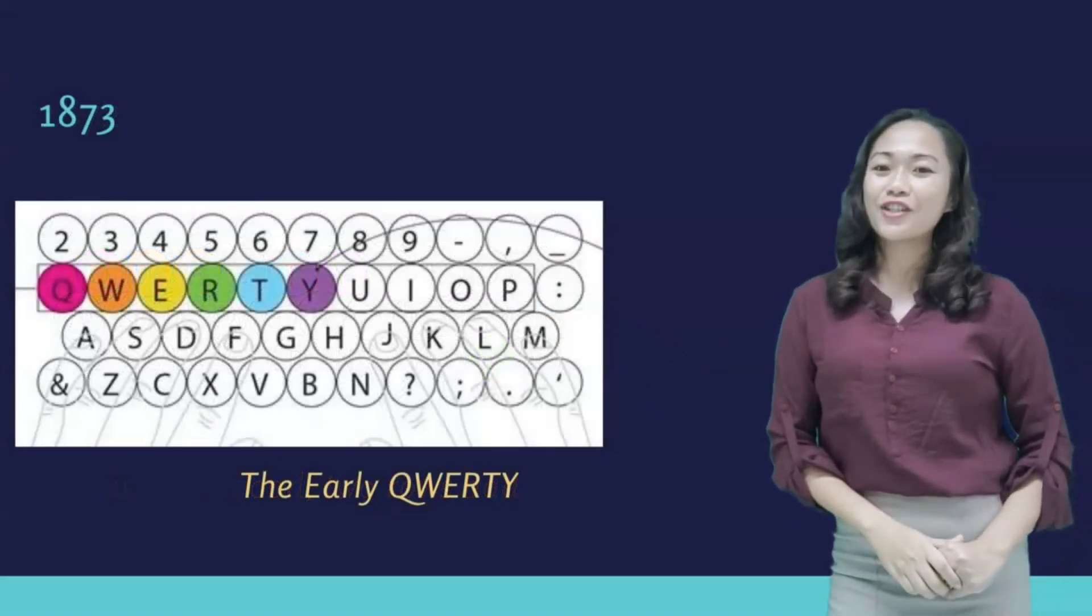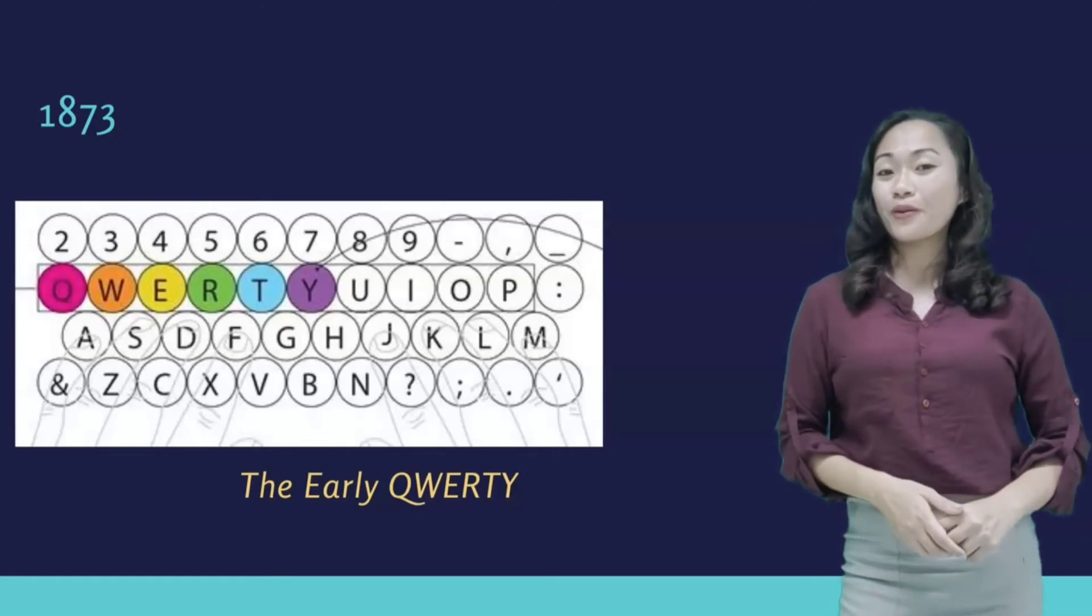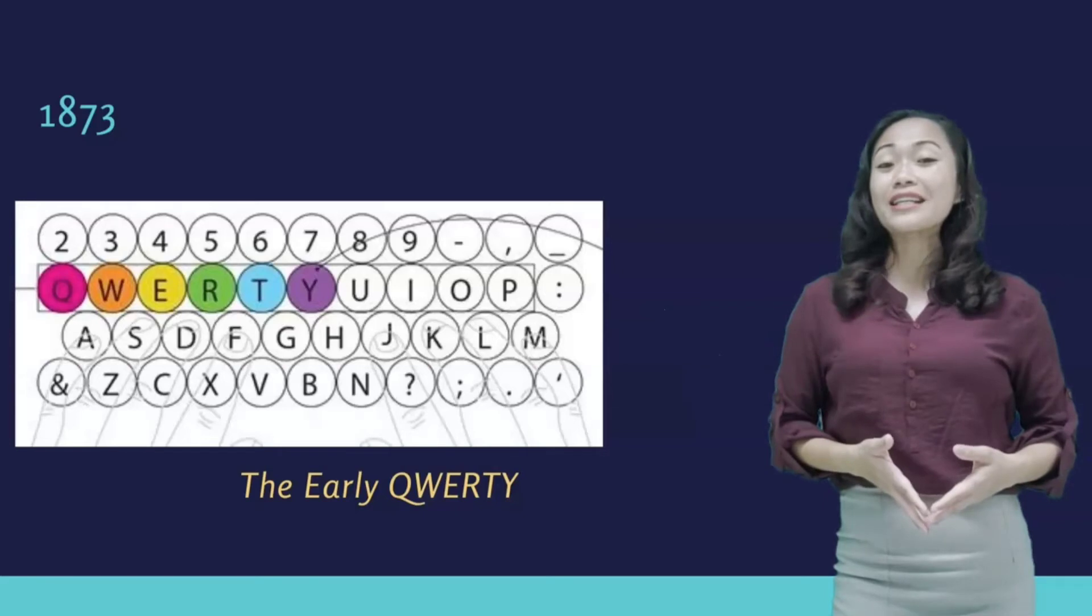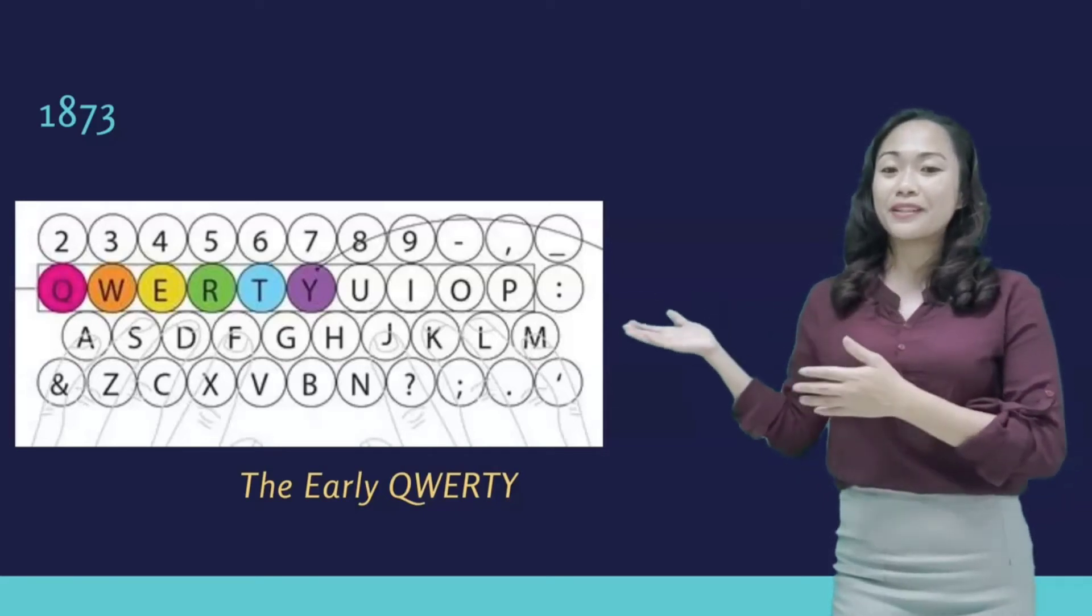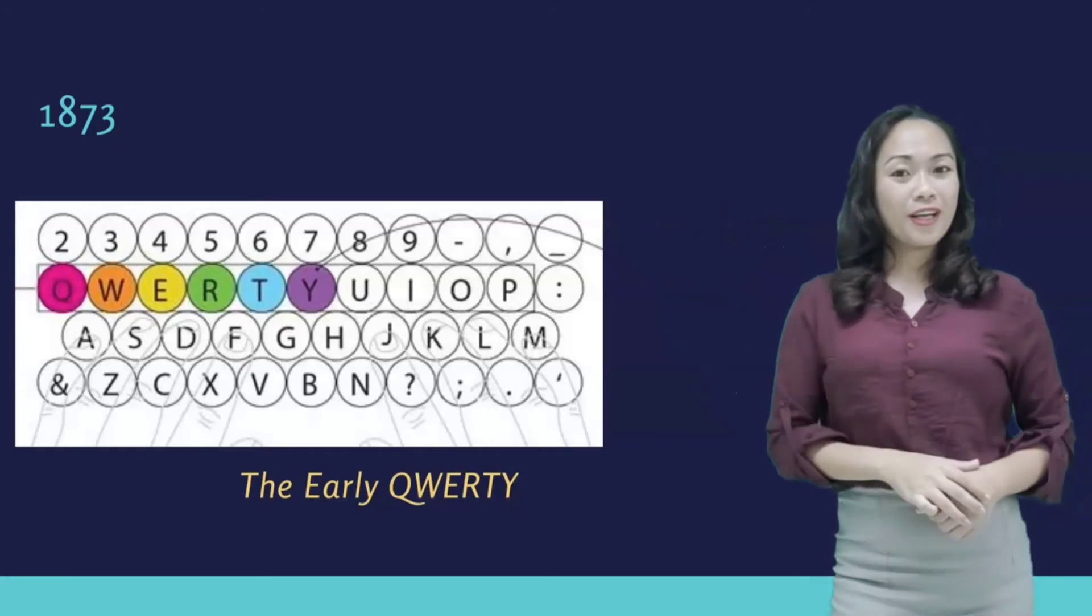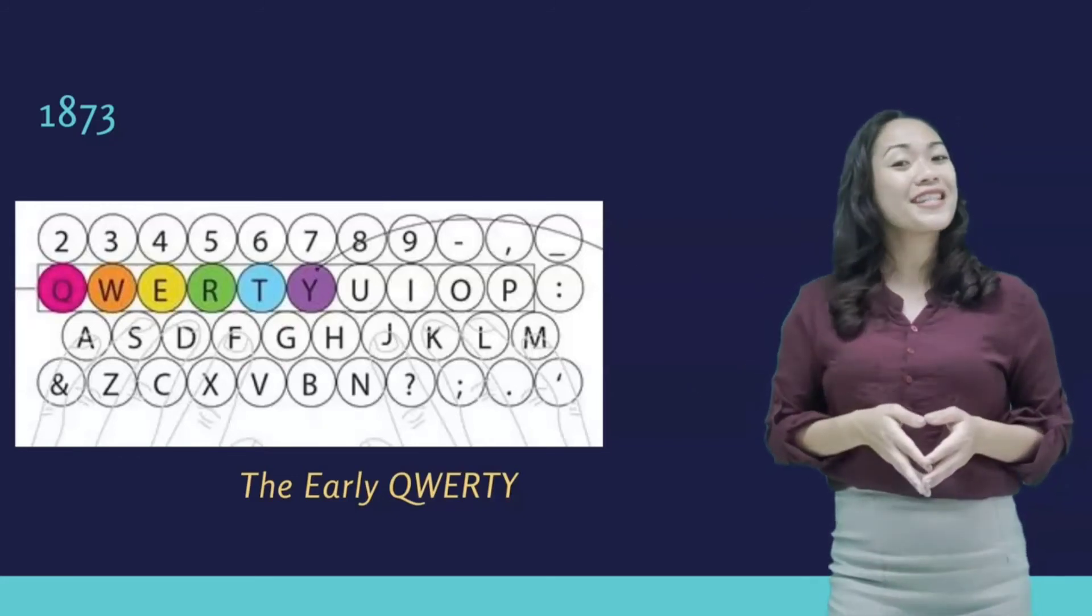In 1873, it was the first appearance of the almost modern QWERTY keyboard. There are only a handful of English words that can be spelled out using the top row of the keyboard. One of them is typewriter. It seems unlikely that this is a coincidence.